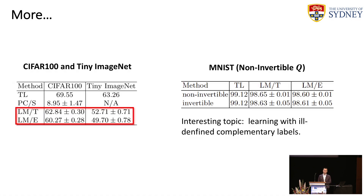We also found an interesting phenomenon in our experiments: even if we are given a non-invertible transition matrix, in some cases good results can still be achieved. This will be our future research topic — that is, how to learn with ill-defined complementary labels.